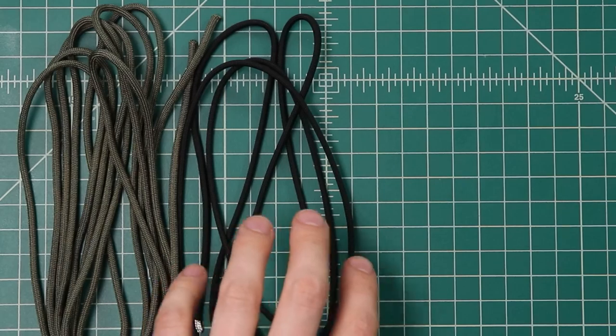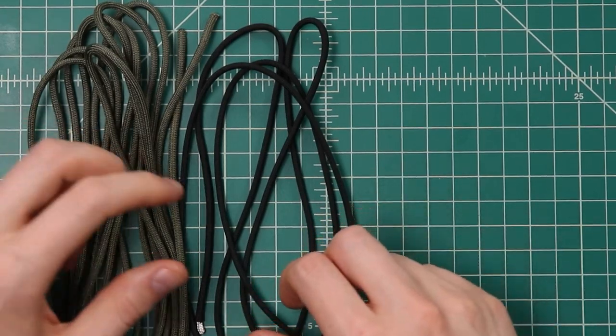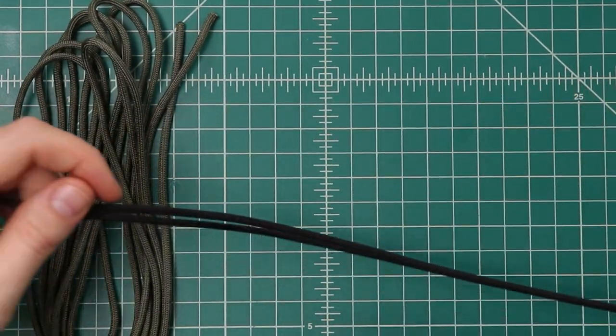So for this project I'm going to be using 5 feet of black and 10 feet of olive drab for a total of 15 feet. Though if you're an experienced knot-tier you may be able to get away with less cord by constructing the knot smaller in your hand. We're going to start with this black cord as it's going to form the base of our pace counter.